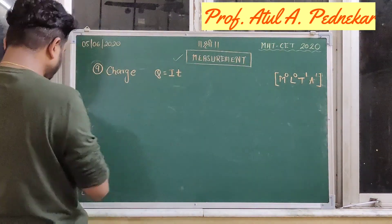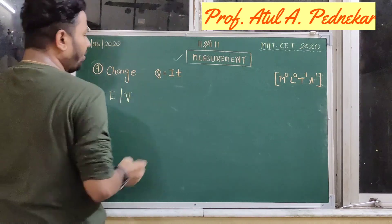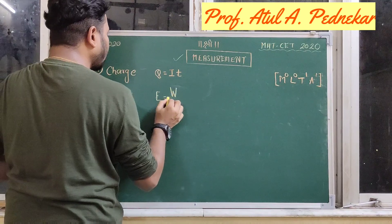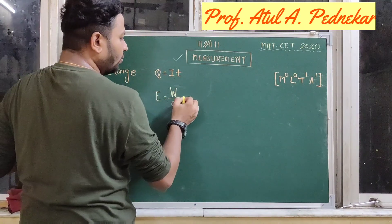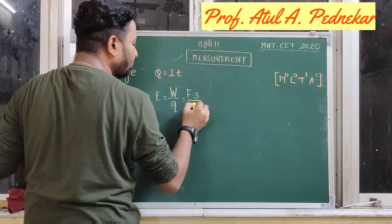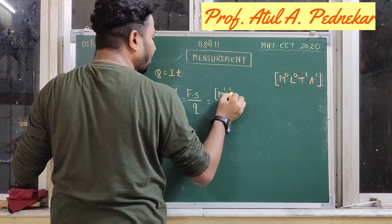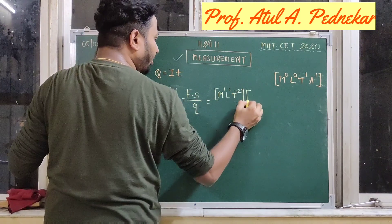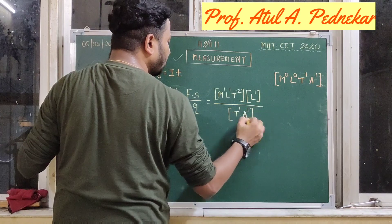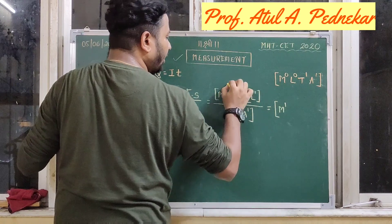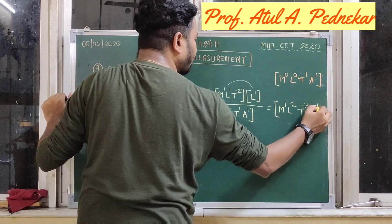The next quantity is EMF or potential difference. It is calculated as work done to circulate a charge through the circuit — that is force into displacement divided by charge. Force dimensions are M1, L1, T to the power minus 2. Displacement adds L to the power 1. Dividing by charge dimensions T1 and A1, and simplifying: we get M1, L2, T to the power minus 3, and A to the power minus 1.